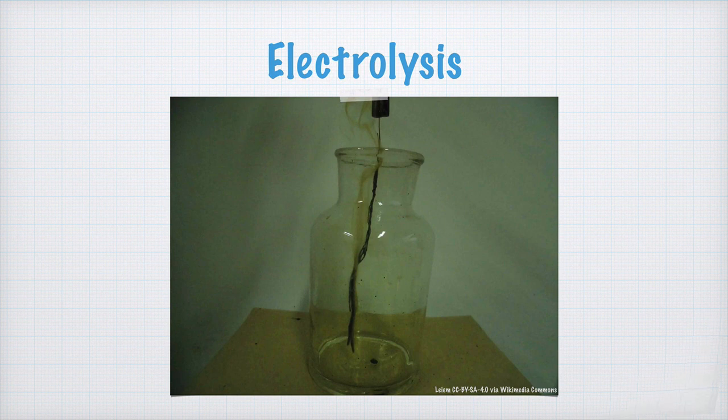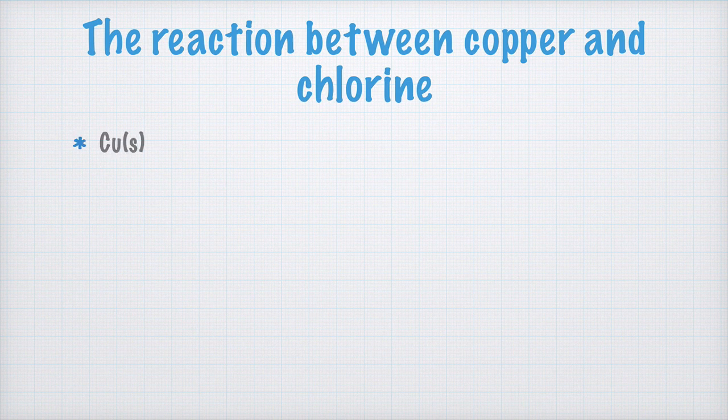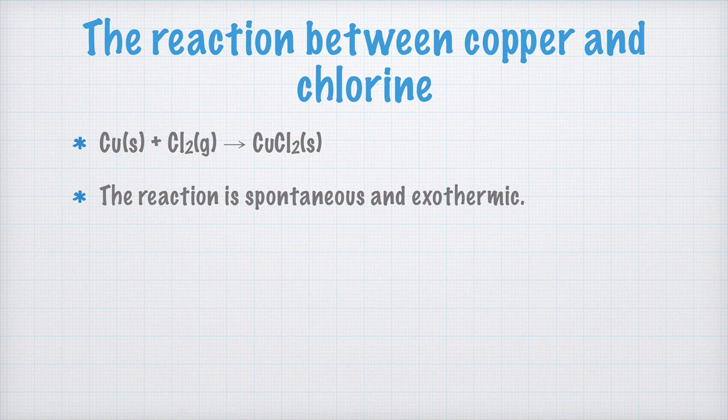Let's take some notes on that too, and you too write, the reaction between copper and chlorine. In this reaction, solid copper reacts with chlorine gas to form solid cupric chloride CuCl2s. This reaction is both spontaneous and exothermic. This means that the electrons perform some kind of work.